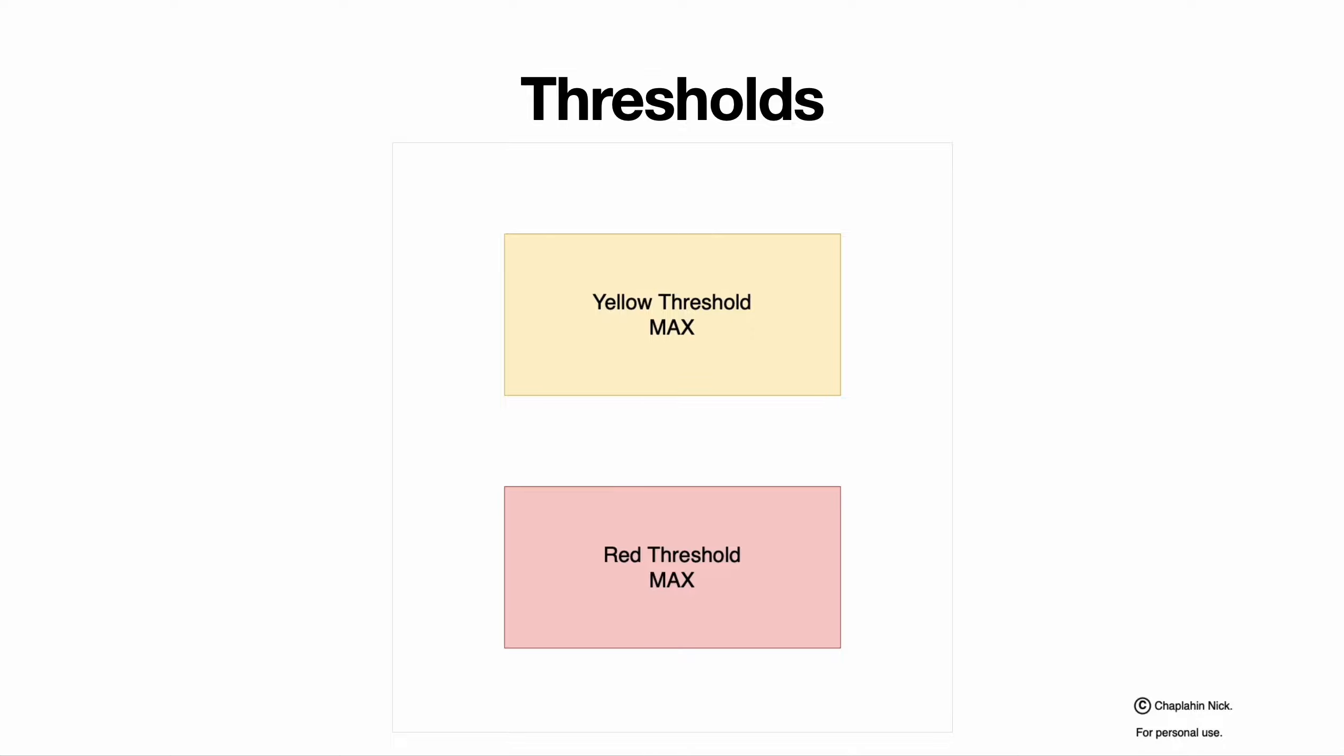When some condition happens to yellow threshold but didn't happen to red threshold, all packets in the traffic are yellow. When some condition happens to both yellow threshold and red threshold, packets in traffic became red.